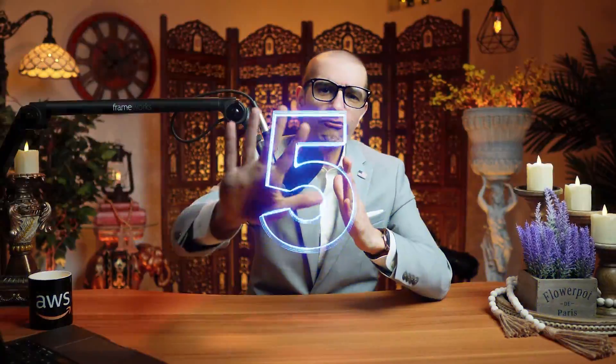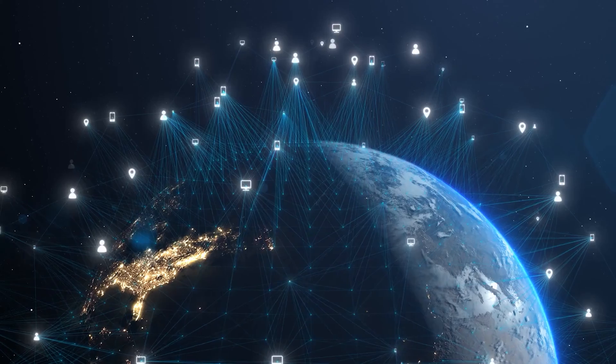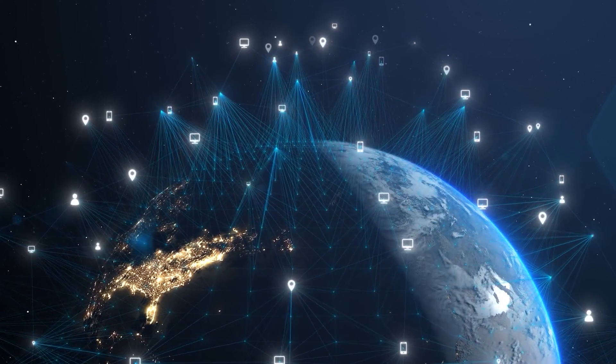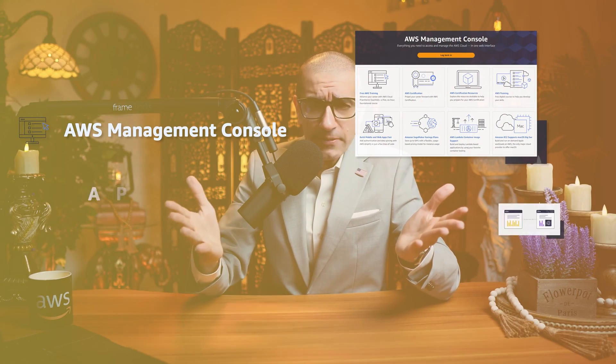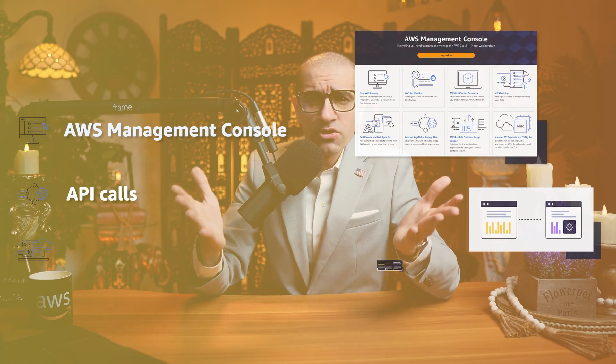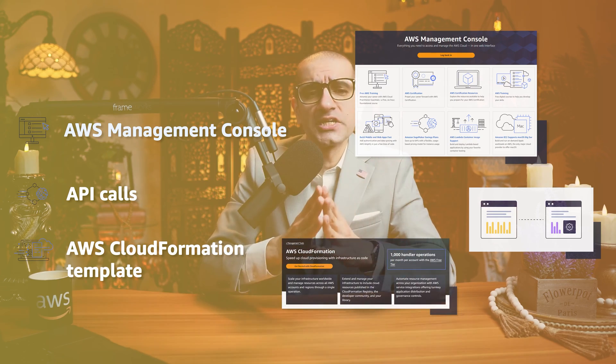Number 5. Since AWS Global Accelerator is a global service, it's not tied to any specific AWS region. You can get started with setting up Global Accelerator through the AWS Management Console, API calls, or by using an AWS CloudFormation template.